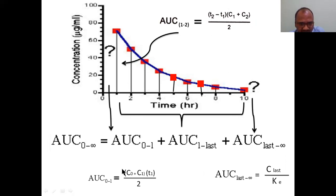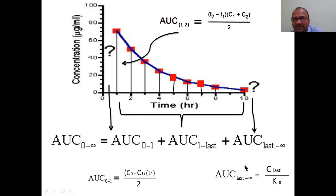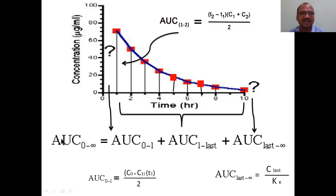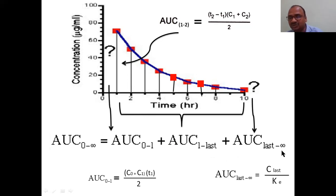AUC 0 to 1 uses a specific formula. AUC from the last time point to infinity uses: last concentration divided by the elimination rate constant (Ke). The total AUC from 0 to infinity equals: AUC 0 to 1, plus all the middle trapezoids (AUC first to last), plus AUC last to infinity.